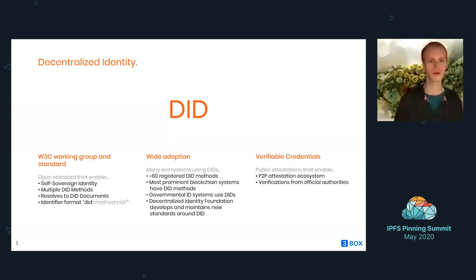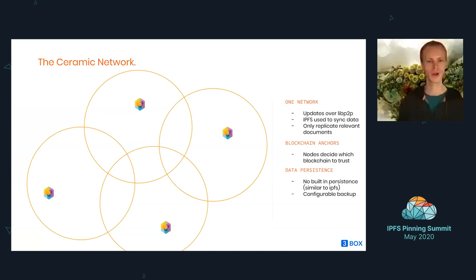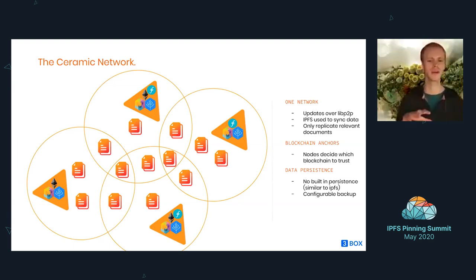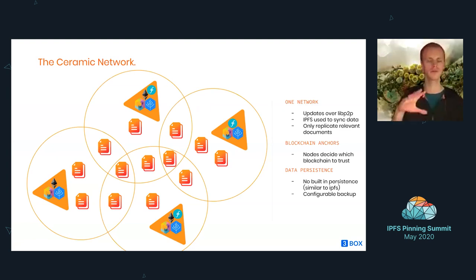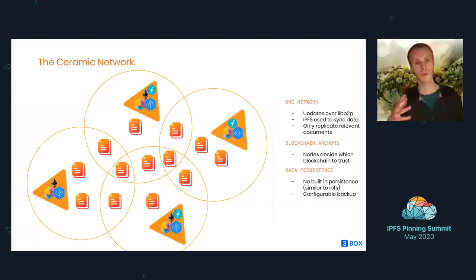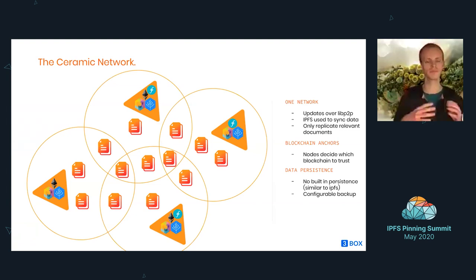The Ceramic network is basically a network of Ceramic documents. Each node in the diagram is a Ceramic node, which is built on top of IPFS — specifically LibP2P and IPLD — and connects to a blockchain. Three nodes on the left are connected to Ethereum, three on the right to Filecoin, and two in the middle are connected to both. When I update a document, that update gets anchored on the blockchain. Ceramic is agnostic, providing a unified network of documents that supply metadata around blockchains.